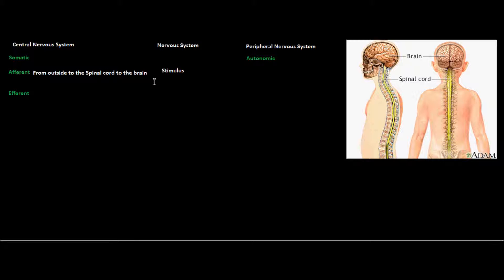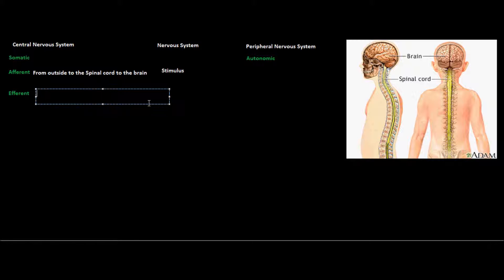When we talk about sound, touch, light — anything that really interacts with receptors — whether the light is interacting with eye receptors, the sound is interacting with ear receptors, or the touch is interacting with skin receptors, that is a stimulus. So that is a really important term to understand when we're talking about these different nerves that are carrying information to the brain or from the brain.